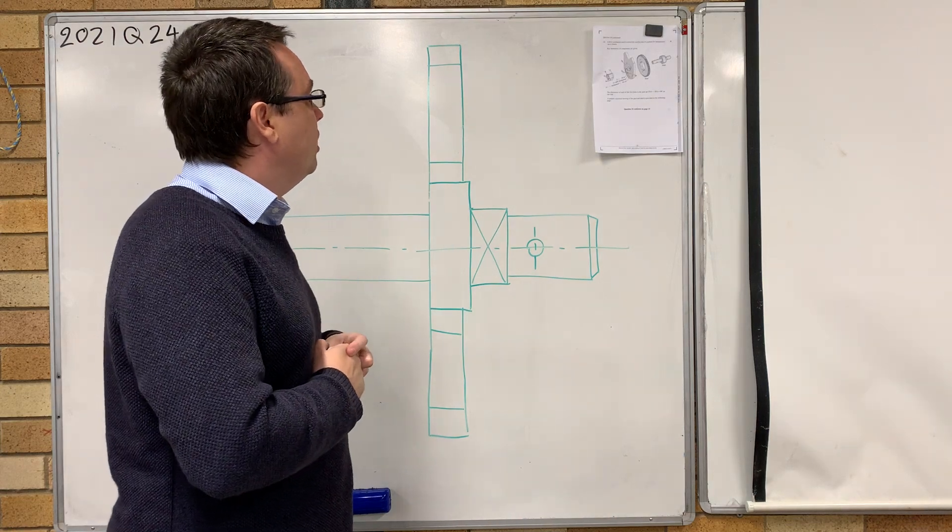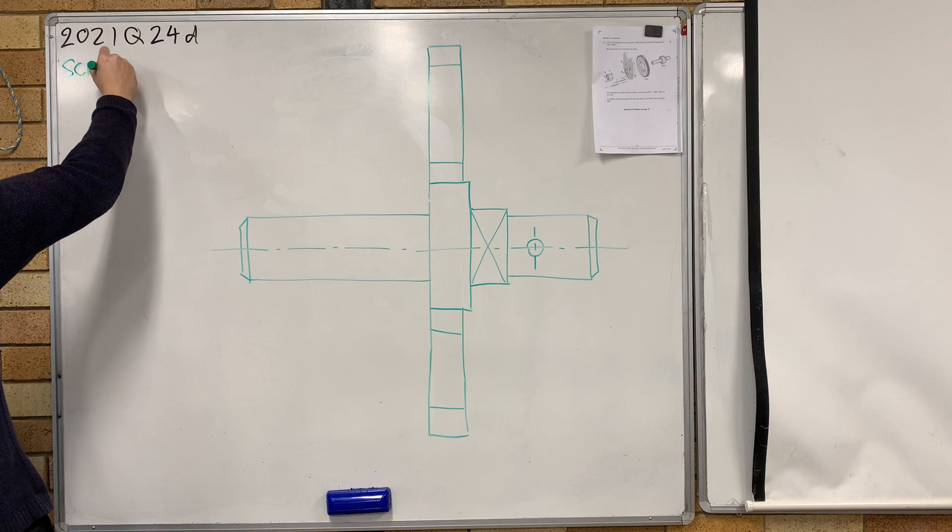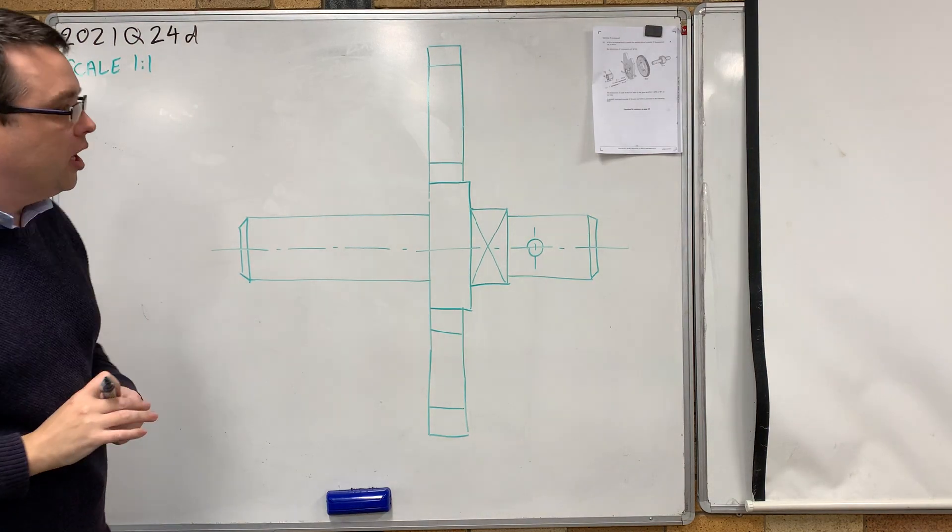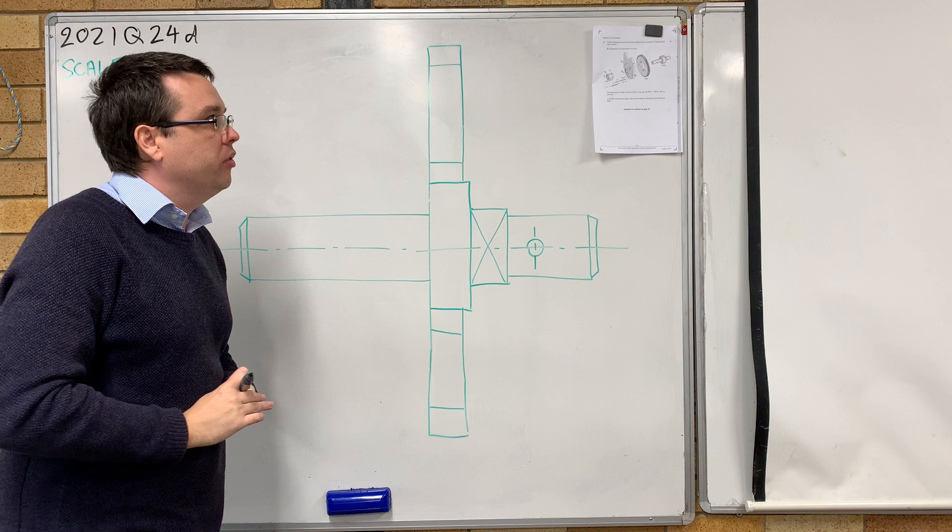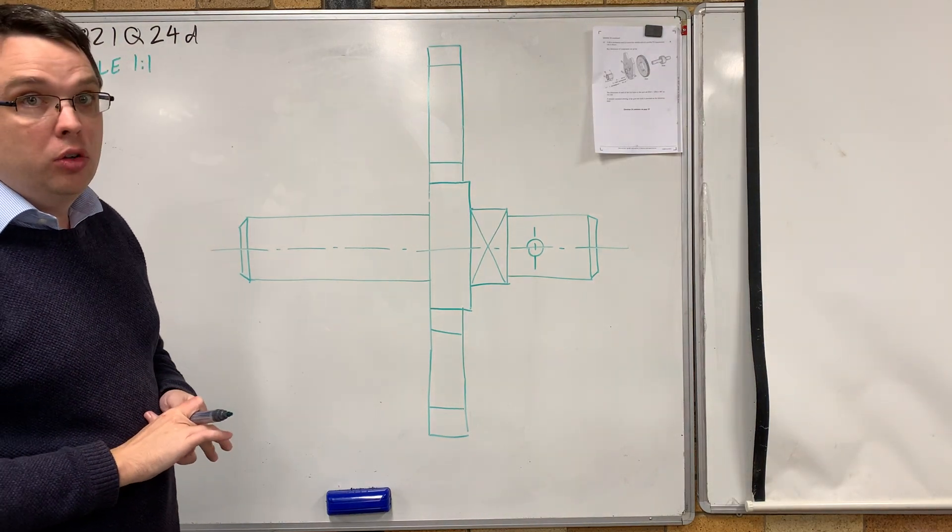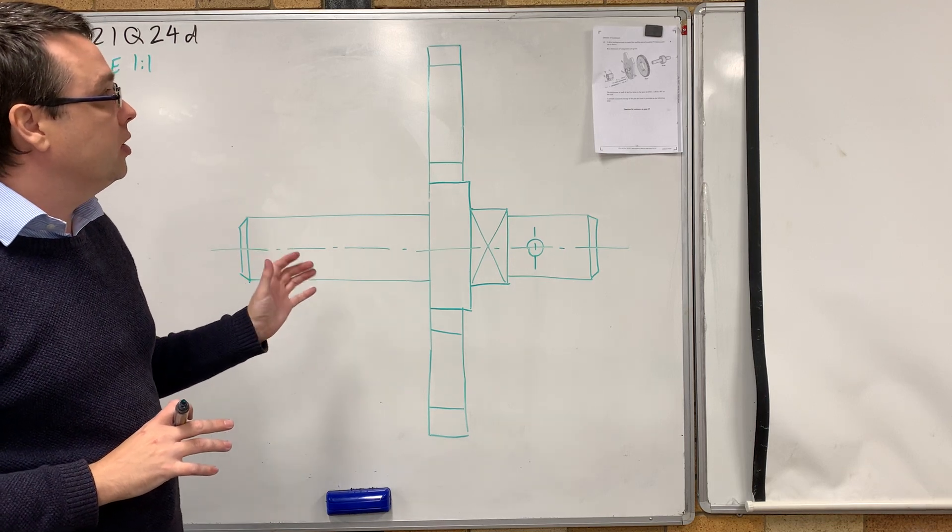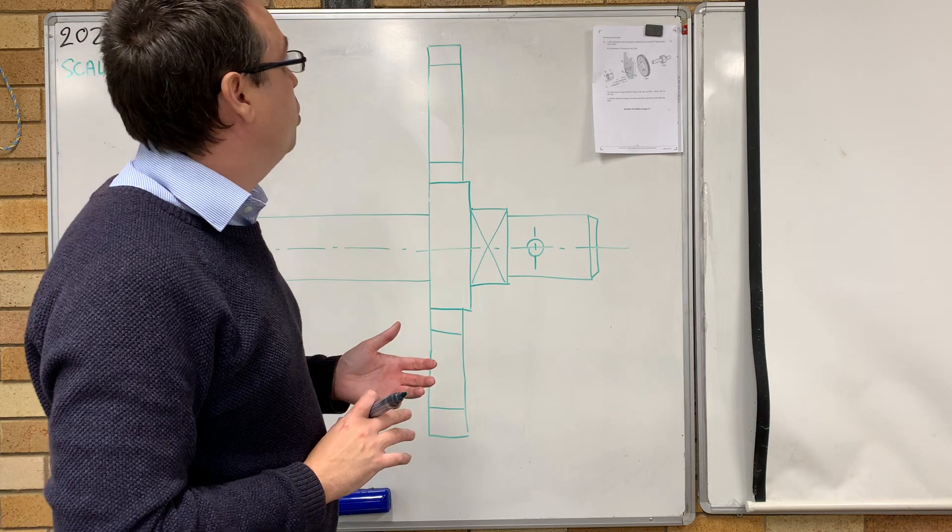The first thing that we notice is the point we should always consider is scale. So the scale is 1 to 1, which means we're going to draw it with the same size. I'm doing a scale of 5 to 1 in order to fit on the whiteboard. The second thing is that they've already given us a lot of information on the following page with a lot of the stuff already assembled. We've already got the shaft and the gear already drawn.